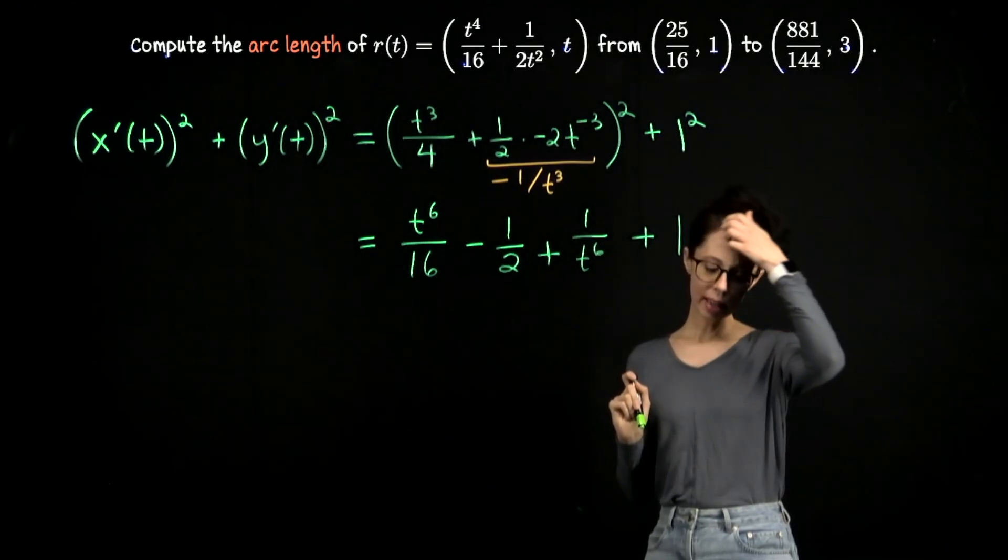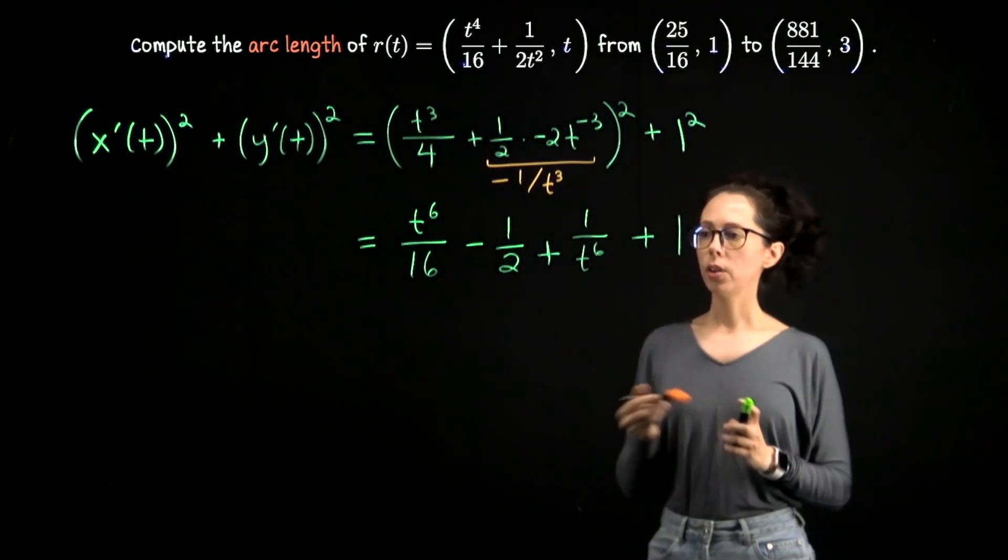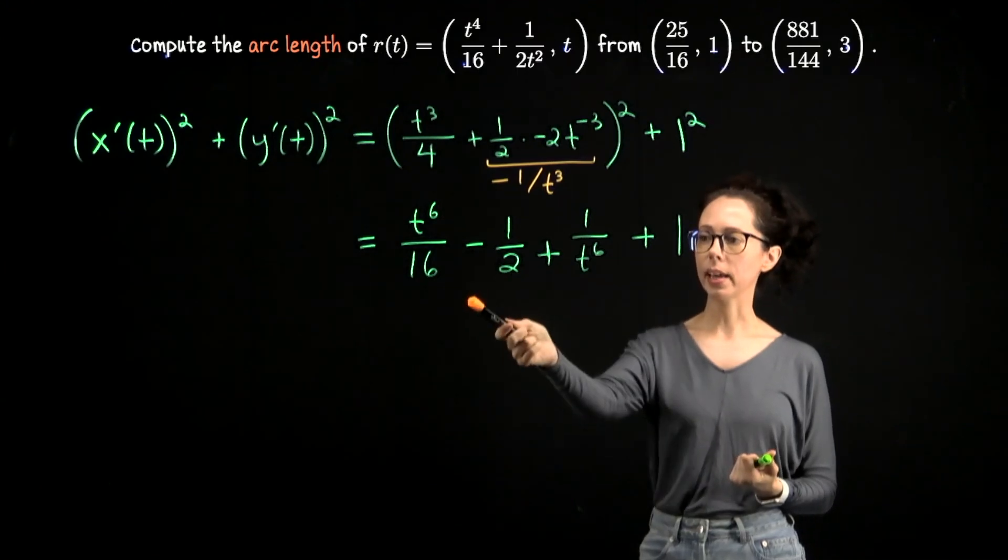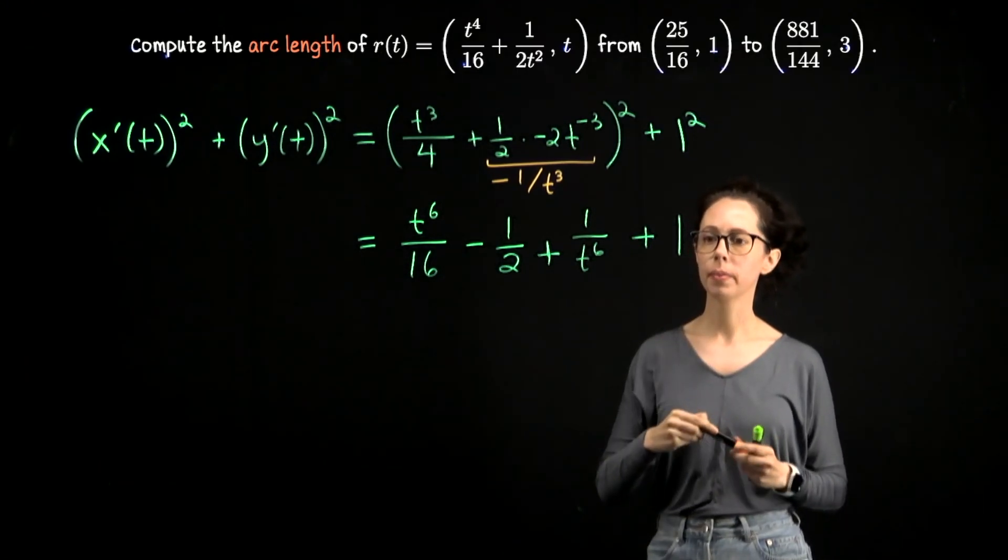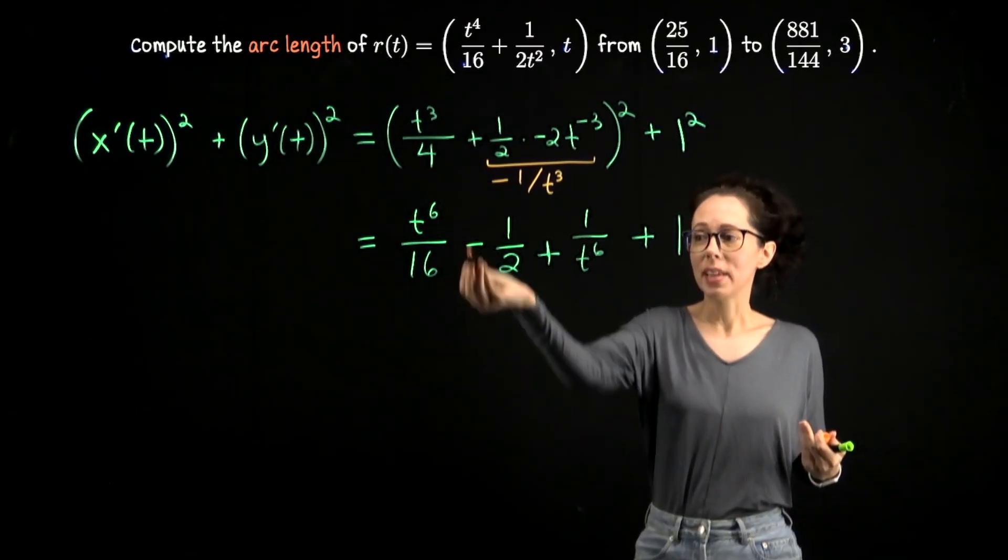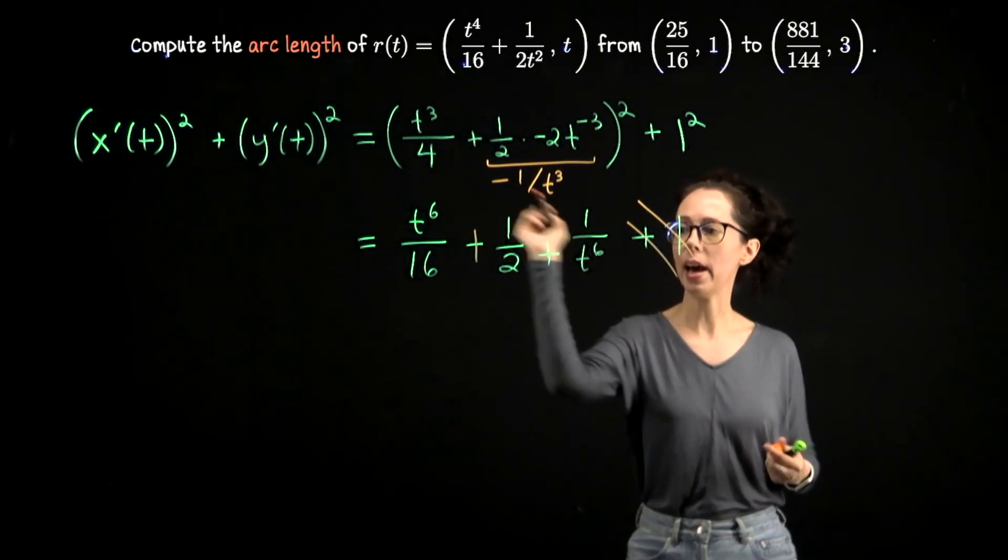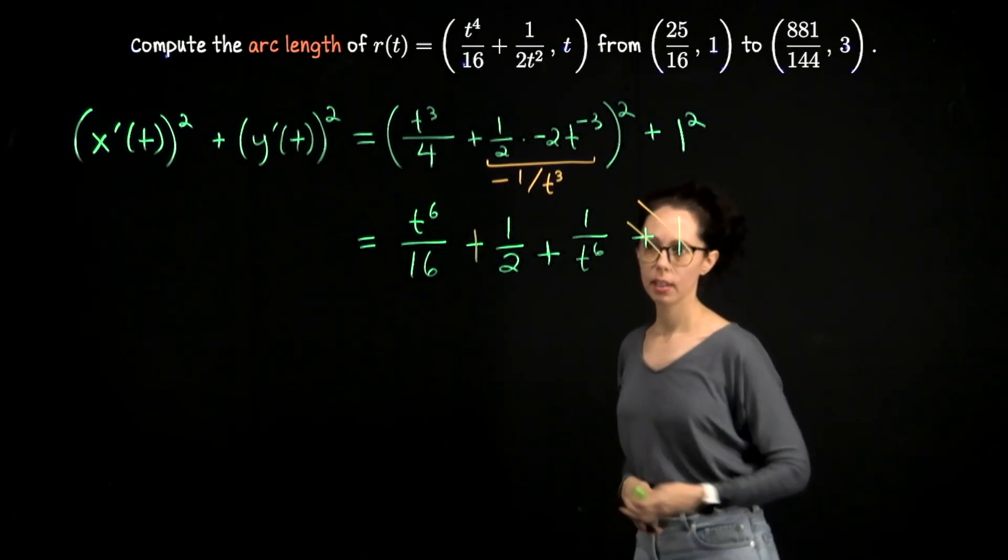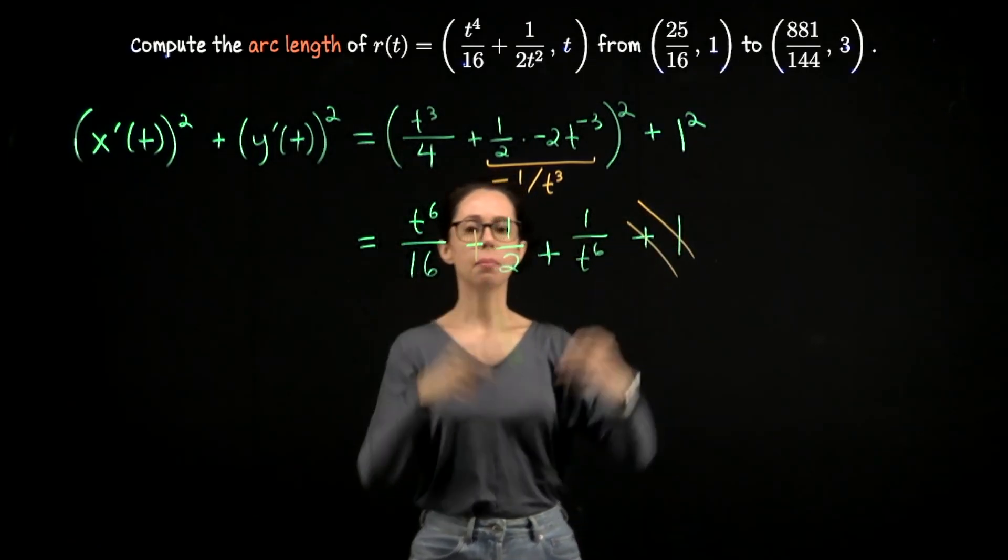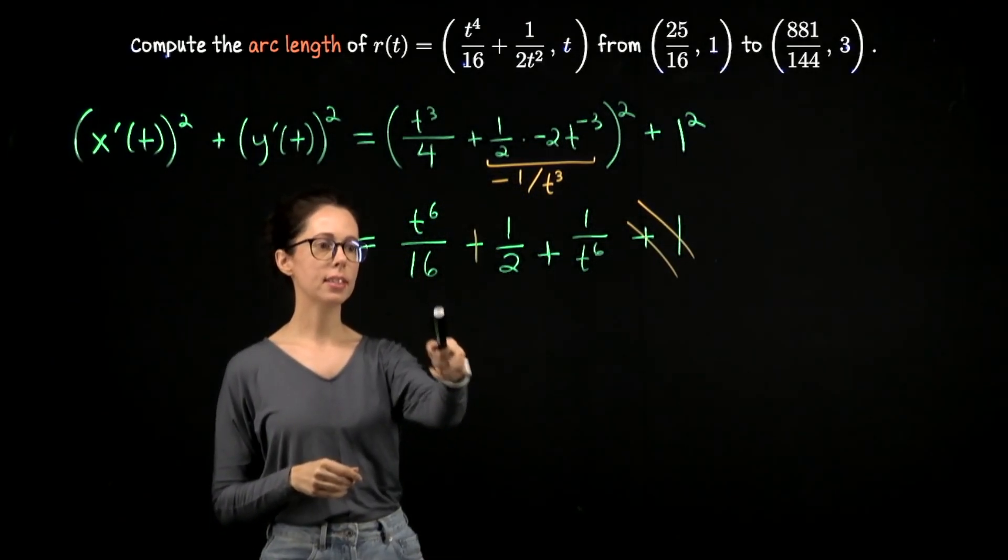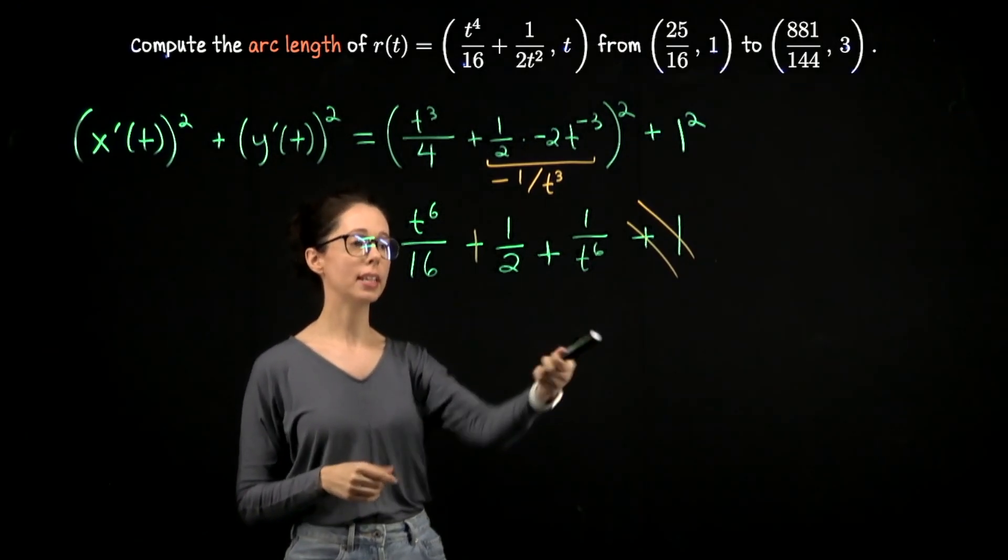The thing is, notice what will happen when I take negative 1 half and add to it 1. It's going to take this 1 half expression and just flip its sign. So I can go ahead and do that. So now this sum has turned into t to the sixth over 16 plus 1 half plus 1 over t to the sixth.